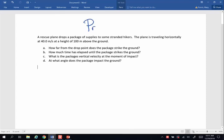All right folks, we're going to do another projectile problem. A rescue plane drops a package of supplies to some stranded hikers. The plane is traveling horizontally at 40 meters per second at a height of 100 meters above the ground.